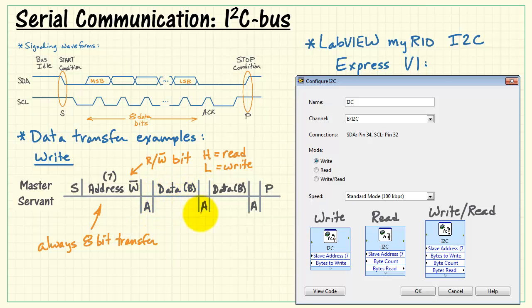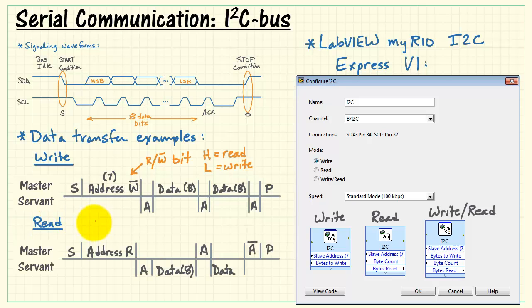The servant acknowledges. At this point, the master can follow it up with another data byte, which is acknowledged. Another data byte, which is acknowledged. And then finally we stop and end the transaction. So that's a basic write operation for multiple bytes.